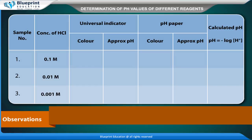Observations: Record the concentration of HCl, the color shown by the universal indicator, and the approximate pH. Also record the color shown by the pH paper and the approximate pH. Calculate the pH using the formula pH = −log[H⁺] for each concentration: 0.1 M, 0.01 M, and 0.001 M.